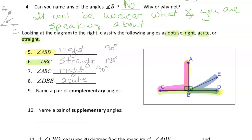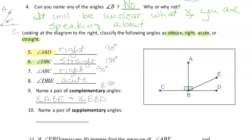Name a pair of complementary angles. Complementary angles sum to 90 degrees. I would say that angle ABE and angle EBD are complementary.